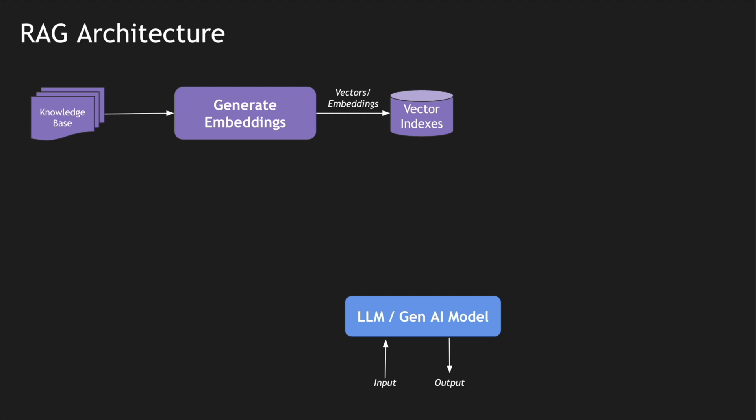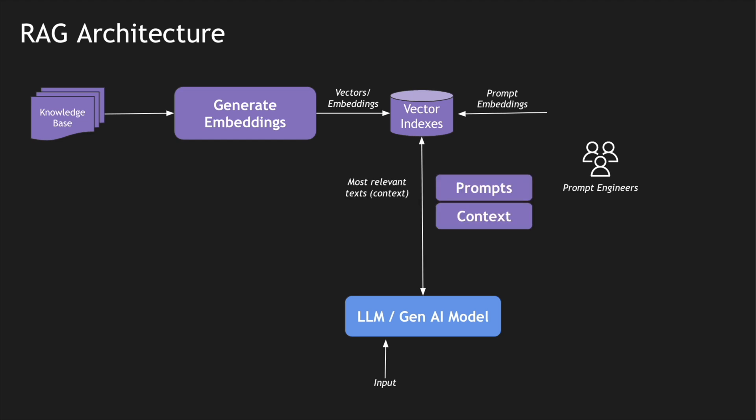Once our data source gets converted into vector embeddings, we also need prompts created by the prompt engineer so that the data can be uniquely identified and linked with existing relevant prompts. Prompt engineers play a key role in structuring these prompts so they are converted into embeddings or vectors that are relevant. Using the context and the most relevant text, we can identify what the user wants by linking data from the vector indexes with what the LLM requires. Finally, the LLM converts that data and sends it back to the caller.